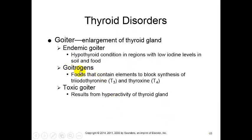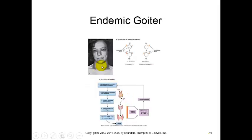We can have goiters that come from goitrogens, which are foods that can block the synthesis of T3 and T4. So you may get iodine, but eating too much of a specific food or substance blocks T3 and T4 production, causing a goiter. We also have toxic goiter, which is due to hyperactivity of the thyroid gland - more intrinsic to the thyroid gland, running rapidly without hormonal control. You can see the enlargement in the neck with an endemic goiter.